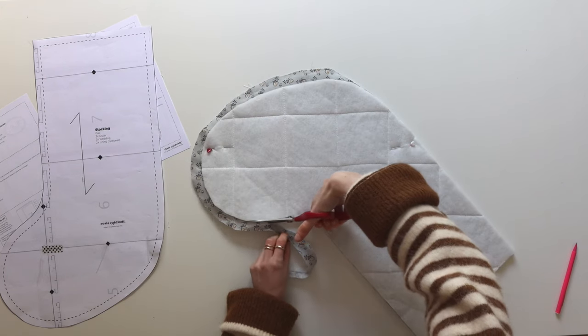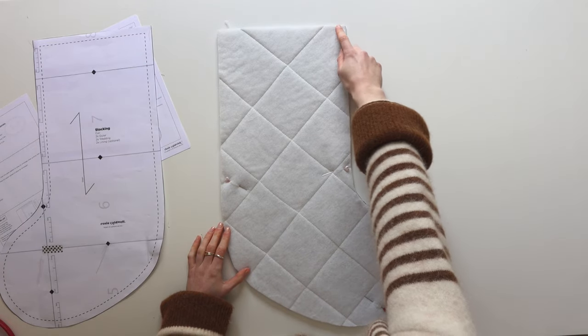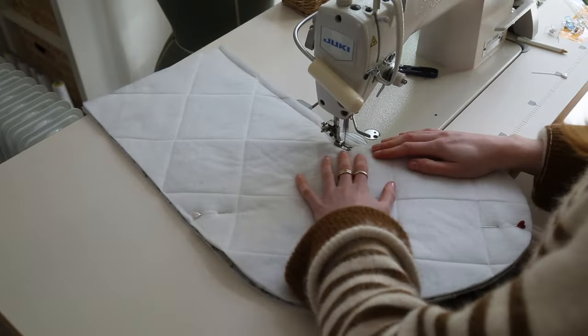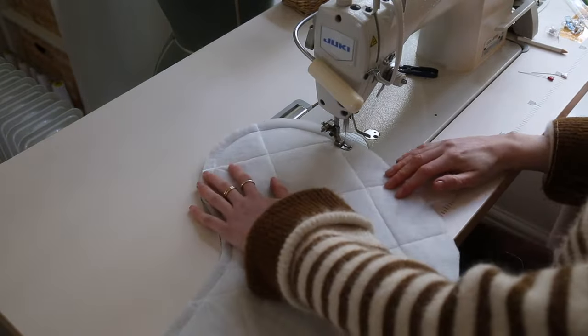Once you've cut out your quilted stocking pieces you can then put them good sides facing and we're going to stitch all the way around the outside, not stitching across the top, and you're going to stitch with a 1.5 cm seam allowance.